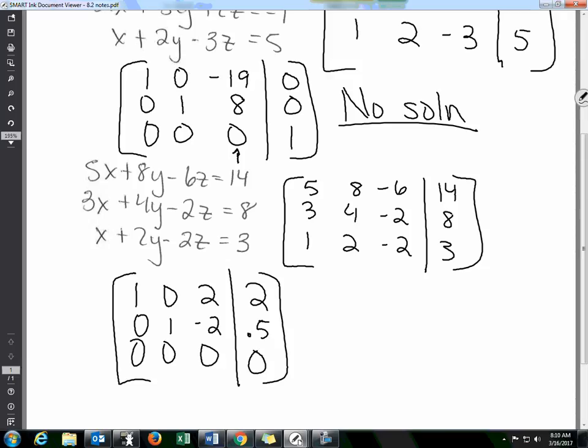So when you get this, when you get zero equals zero on the bottom, this is what's called infinitely many solutions.